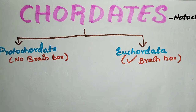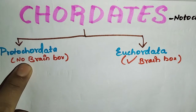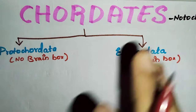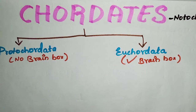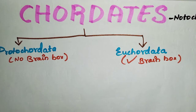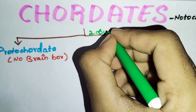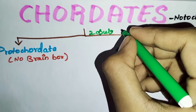So next, Proto-chordata has subphyla. These are the two subgroups of Chordata: Proto-chordata and Eu-chordata.